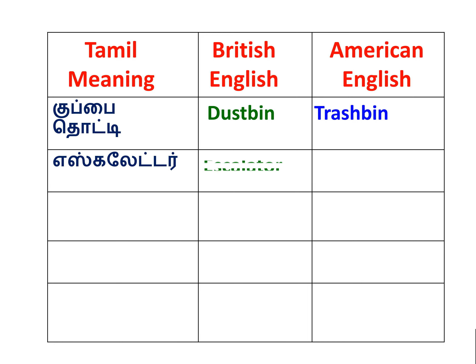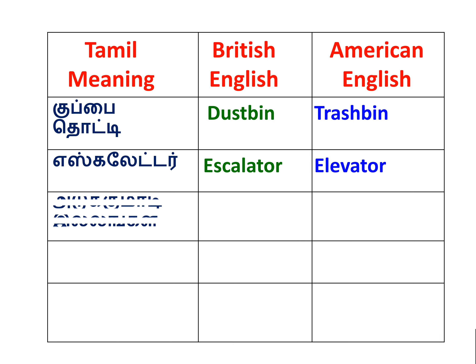Next word is Escalator — it is in British English. American English is Elevator. Next word meaning a flat — British English is Flat. American English is Apartment.